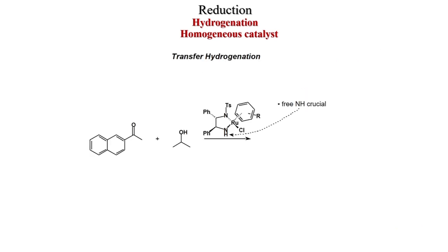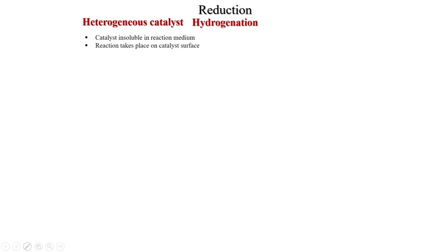Transfer hydrogenation, similar to MPV reduction, is also possible. For example, using 1,2-diphenylethylenediamine with a ruthenium catalyst, a naphthyl-containing ketone is reduced to give the chiral alcohol, and isopropanol is converted to acetone as the hydrogen source.